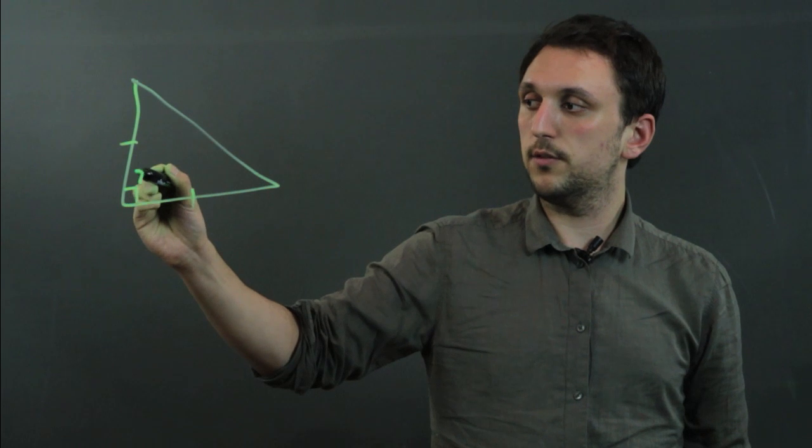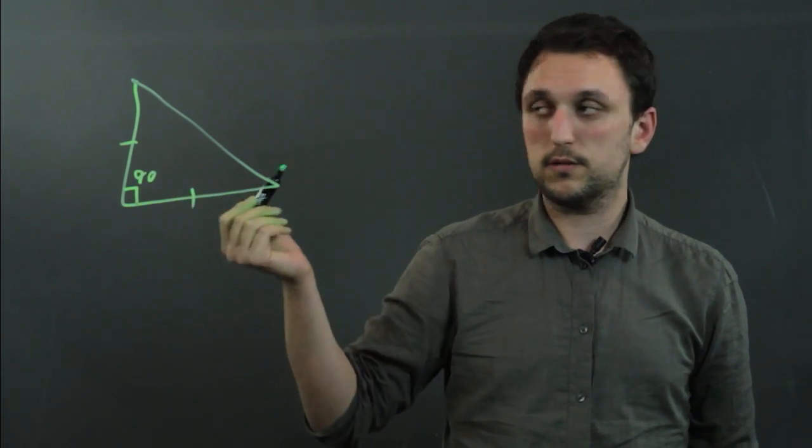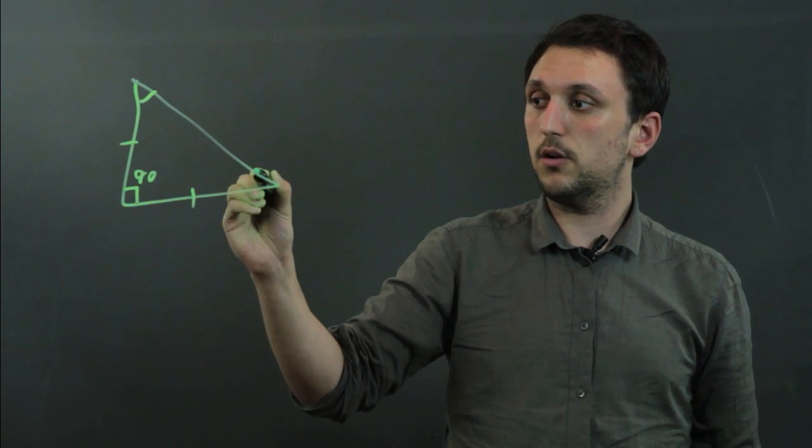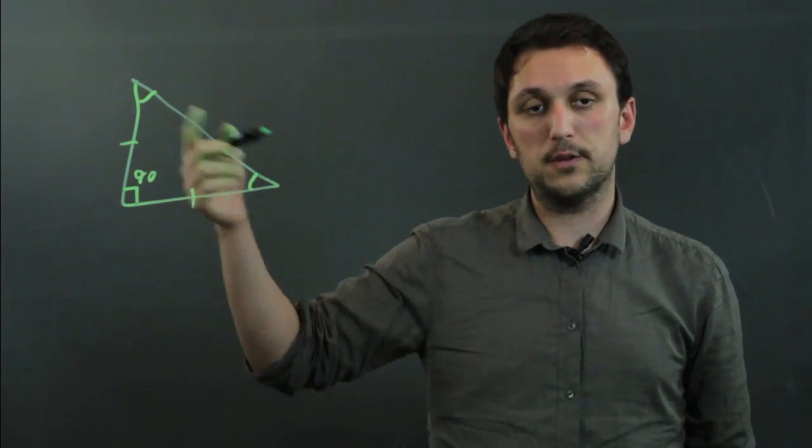So for example, if this is 90, we know that this side equals this side, then we know that this angle has to equal this angle, and they have to be isosceles.